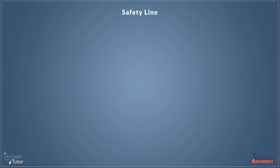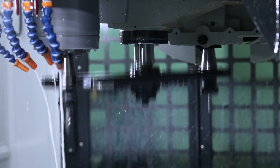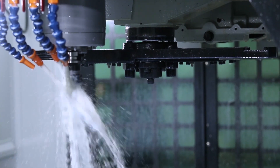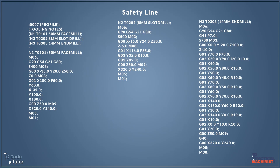Hello, my name's Mark from G-Code Tutor and today we're going to take a look at safety lines. What we use safety lines for is at the beginning of each section of program, we add a line in to put the machine into a default state. So this means if we stop the program halfway through and jump back in and rerun a different tool, we know for sure that the machine is going to be in a safe state to run.